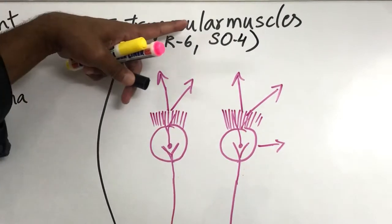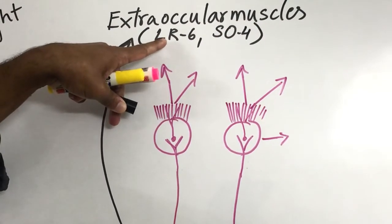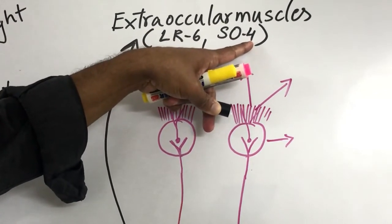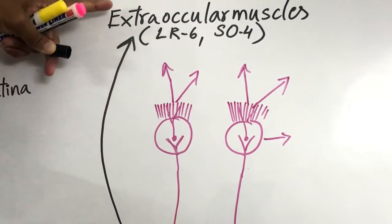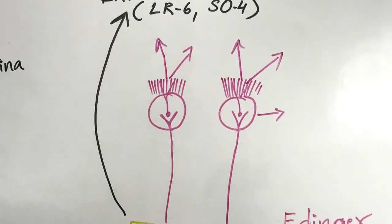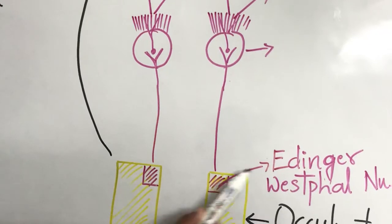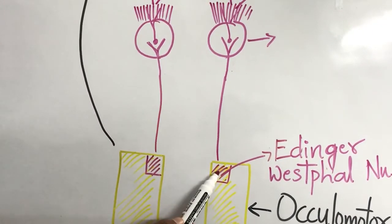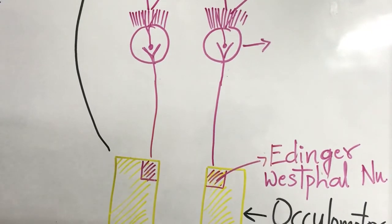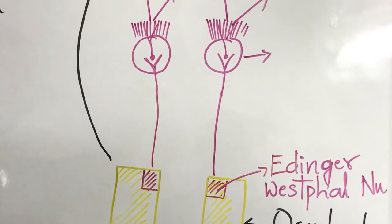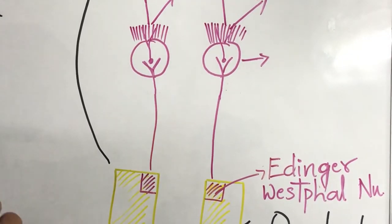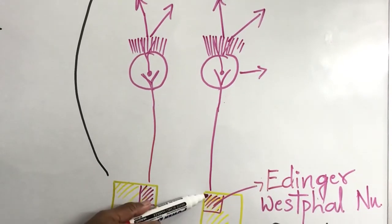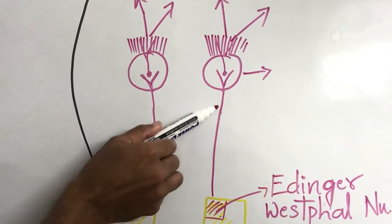The oculomotor nerve supplies all extraocular muscles except lateral rectus (supplied by the sixth cranial nerve) and superior oblique (supplied by the fourth cranial nerve, the trochlear nerve). Another important function comes from the Edinger-Westphal nucleus, which forms the preganglionic parasympathetic component of the oculomotor nerve. These preganglionic parasympathetic fibers arising from the Edinger-Westphal segment run to the orbit and synapse within the ciliary ganglion.